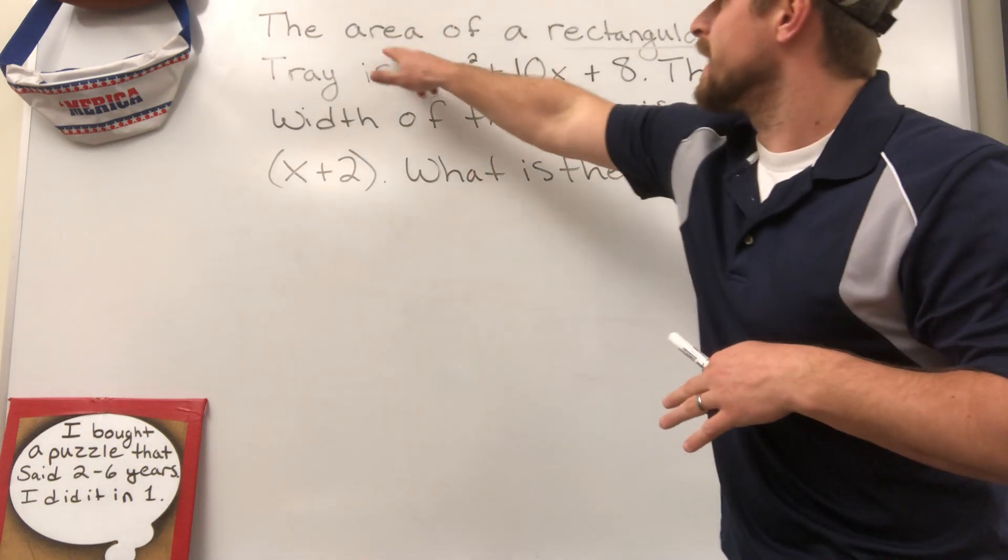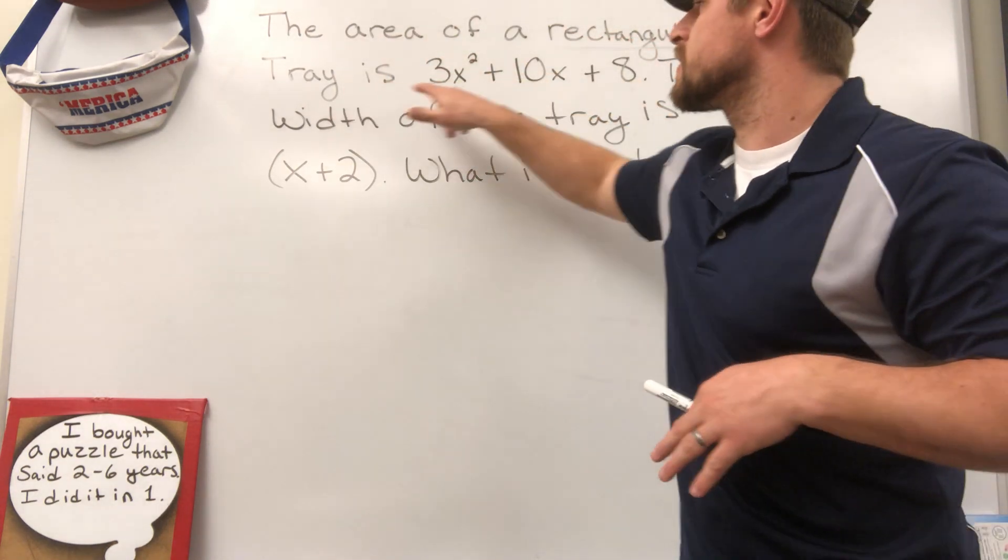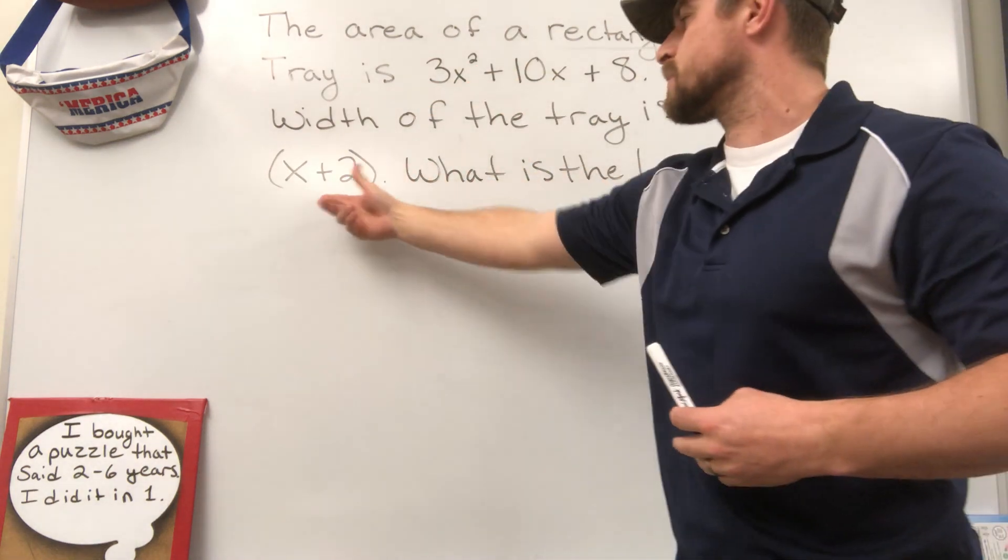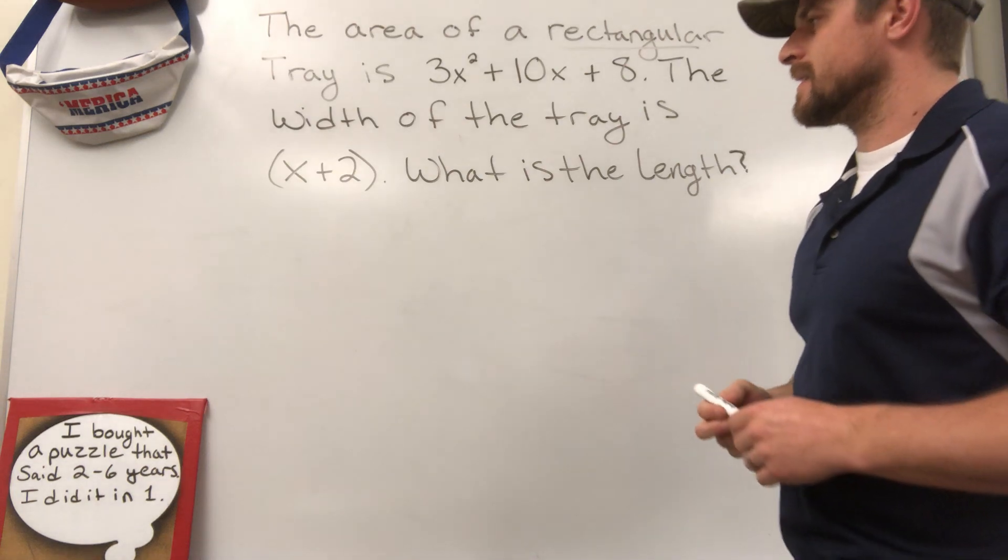So the question is, the area of a rectangular tray is 3x squared plus 10x plus 8. The width of the tray is x plus 2. What is the length?